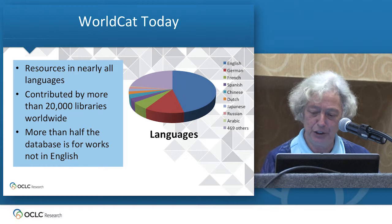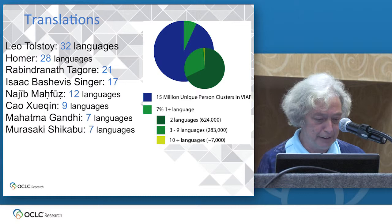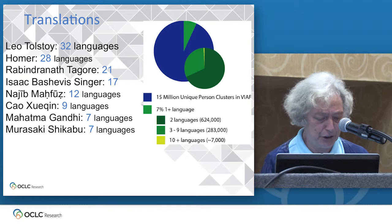We have been focusing on the content that is most likely to be of interest to the most people: translations. The cream of the world's cultural and knowledge heritage is shared by being translated, and WorldCat contains many rich cataloging records for these translations.